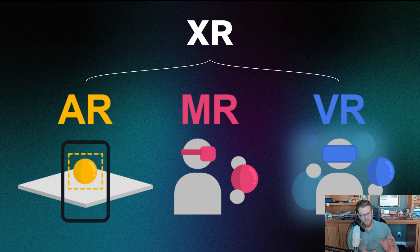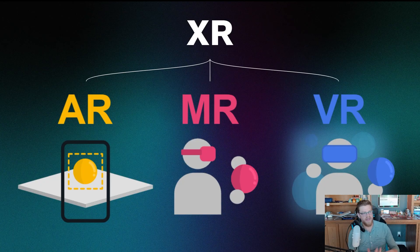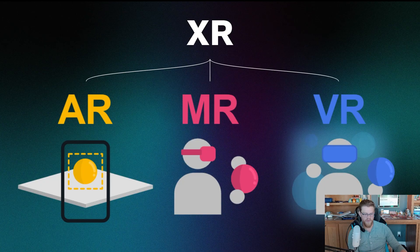There's a bit of a blurry line between MR and AR sometimes, but the idea of mixed reality is that you also have the pass-through into the real world of seeing everything around you, but the digital objects that you're interacting with have context and contextual awareness of the world around you.